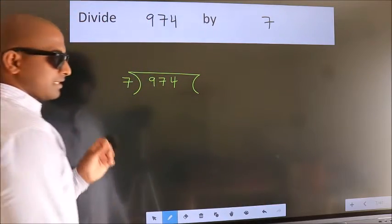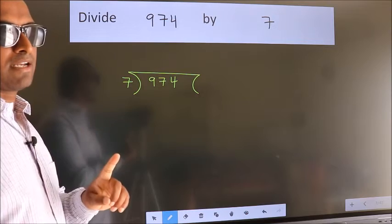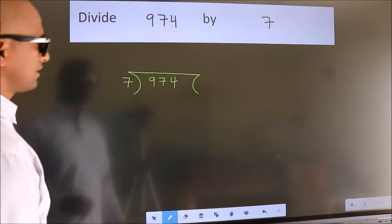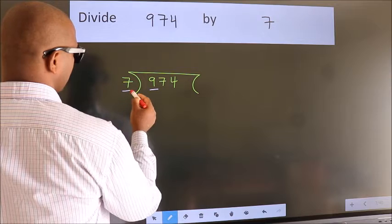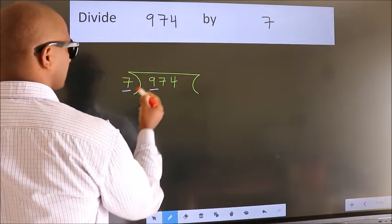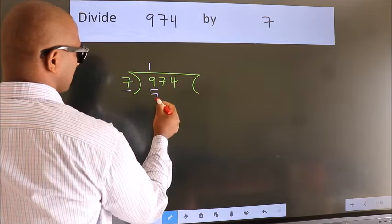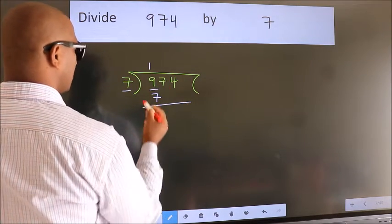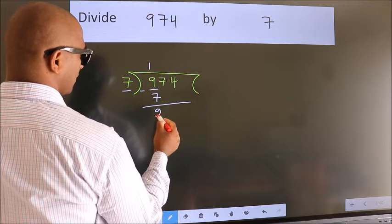This is your step 1. Next, here we have 9, here 7. A number close to 9 in 7 table is 7 once 7. Now, we should subtract. We get 2.